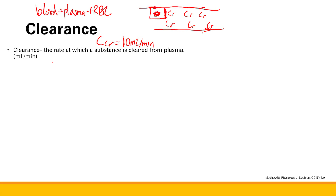All that creatinine is sent out into the kidney and removed from the blood — 10 milliliters worth. The next minute, another 10 milliliters of blood is cleared of all its creatinine. So now this 10 milliliters of blood doesn't have creatinine anymore. Another minute, another 10 milliliters. It basically means the rate at which a substance is being cleared from plasma.